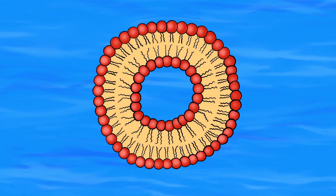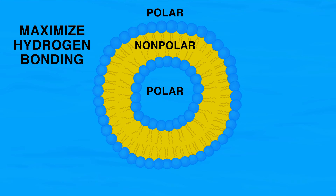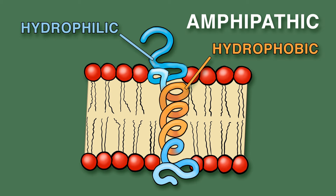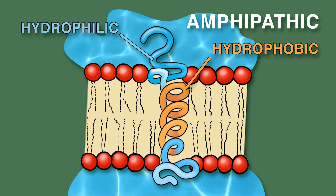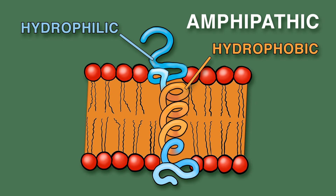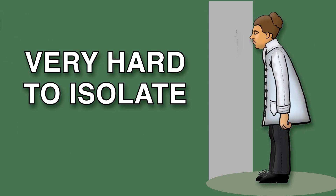The hydrophobic effect is why phospholipids in water will spontaneously form lipid bilayers. These bilayers minimize contact between polar and nonpolar molecules, maximize hydrogen bonding, and maximize entropy. This is also why transmembrane proteins are amphipathic, meaning they have regions which are hydrophilic and regions which are hydrophobic. The hydrophilic regions are exposed to water on either side of the membrane, while the hydrophobic regions interact with the hydrophobic tails of lipid molecules in the interior of the bilayer. As a result, transmembrane proteins are stuck permanently in the cell membrane and are very hard to isolate.